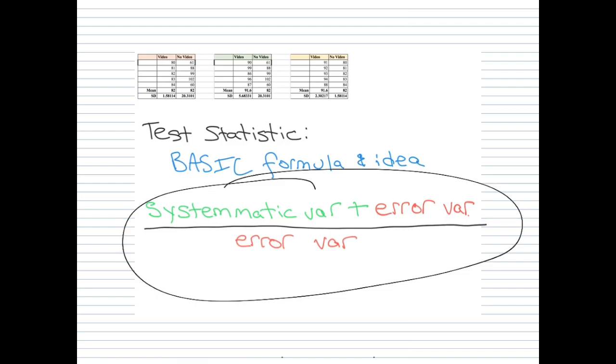First of all, let's start with systematic plus error variance. All that is is the difference between means. If we look up here at the examples, and I promise I will post this Excel file for you guys because I know it's kind of hard to see, but right here in the red example there is no real systematic variance. The means are the same.